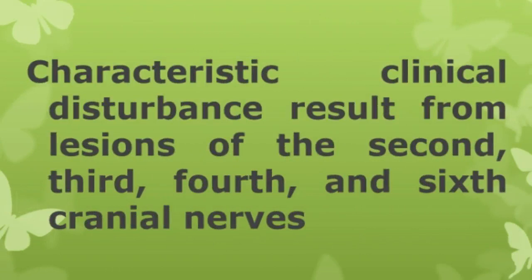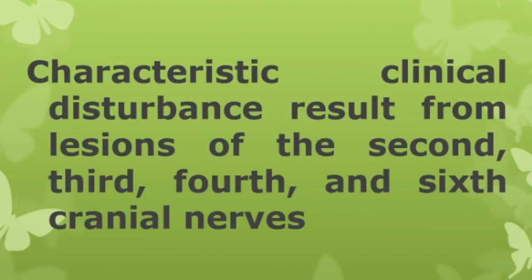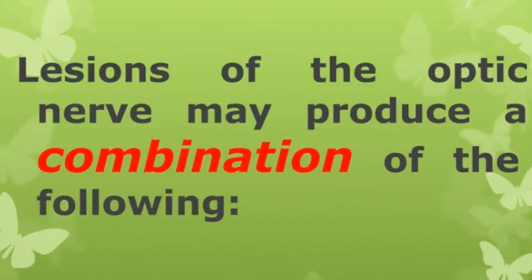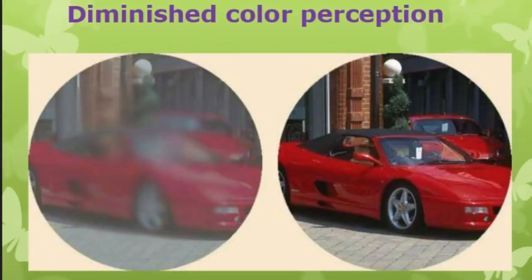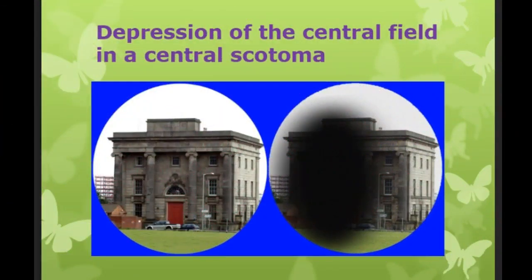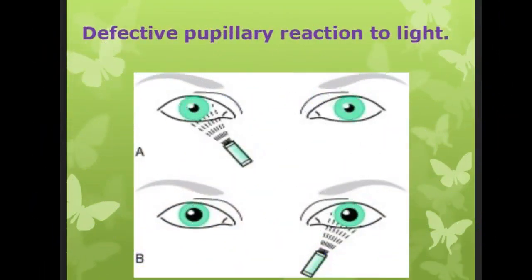We start with neuro-ophthalmology. Characteristic clinical disturbances result from lesions of the 2nd, 3rd, 4th, and 6th cranial nerves. The optic nerve behaves as though it were primarily carrying central visual information. Therefore, lesions of the optic nerve may produce a combination of: loss of visual acuity, diminished color perception, depression of the central field in a central scotoma, and defective pupillary reaction to light.